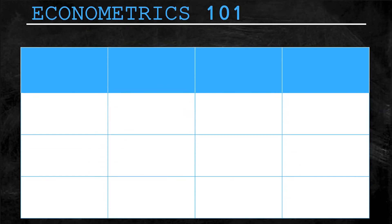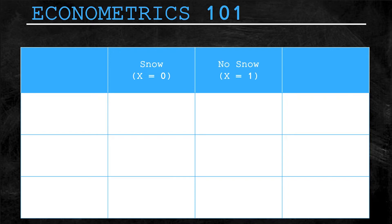Consider the following example which actually ties into the previous examples we've been using in the Econometrics 101 series. So if you haven't seen the previous videos, here's a reminder to go back and check them out — links in the description. We have two random variables denoted with uppercase X and uppercase Y. We want to keep the first example super easy to introduce the new concept, so let's make these variables binary random variables — that is, they can only take on one of two values.